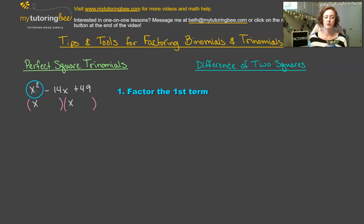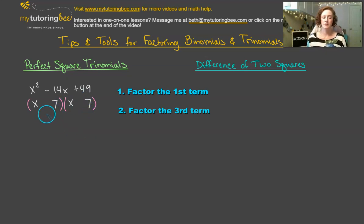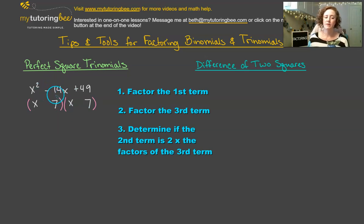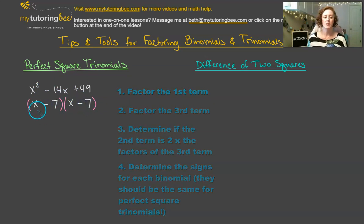Now we're going to skip over the middle term and go directly to our last term, which is 49, and figure out our factors of 49. We could multiply 1 times 49 to get 49, but 49 is a special number because it is a perfect square. That number is 7 — 7 times 7 gives us 49. So that's what we're going to use in our second position of each binomial. Because when we add 7 and 7, that gives us 14.